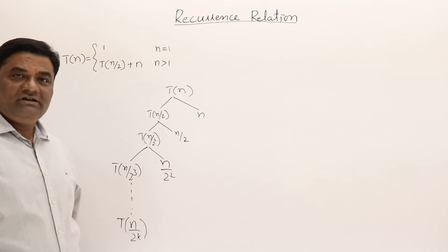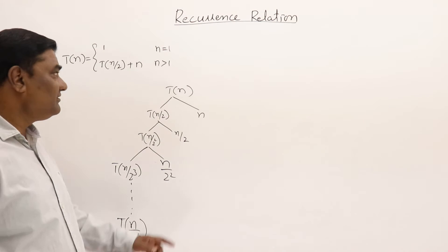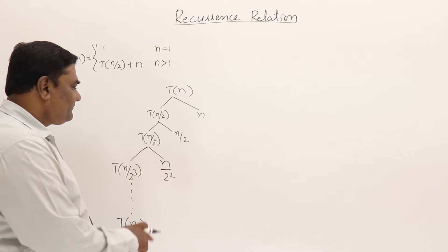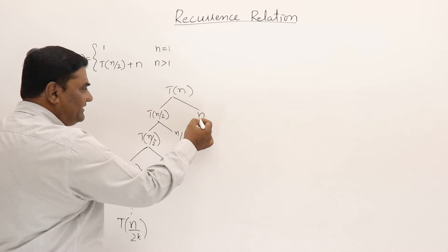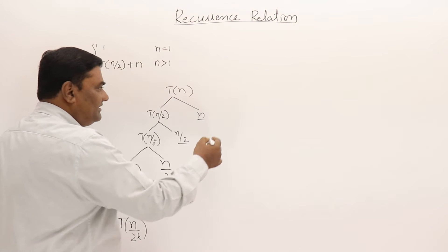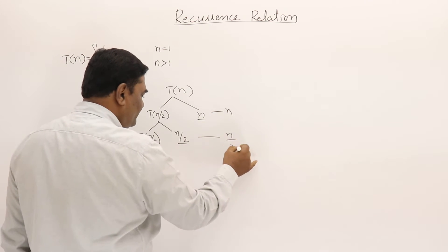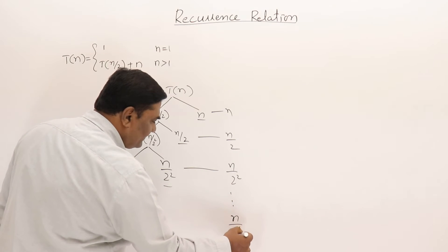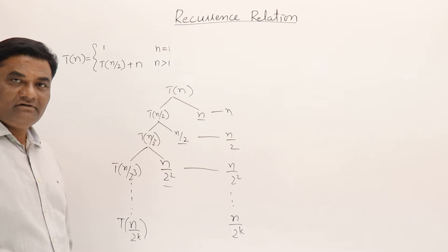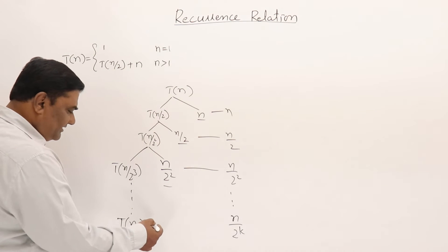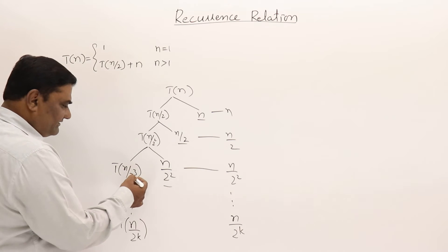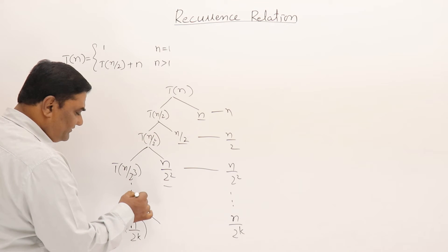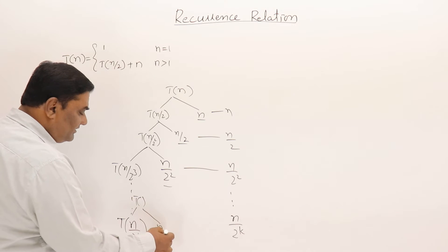When we reach n/2^k, I assume it has become 1, because the smallest value is n = 1. So I've reduced it down to 1. Now if I take the times at each step and add them, it will be: n, then n/2, then n/2², and so on to n/2^k. The last step will be n/2^k, and the second-to-last will be n/2^(k-1).